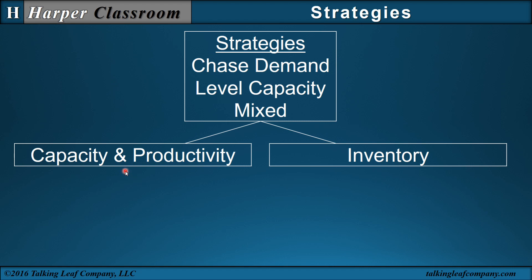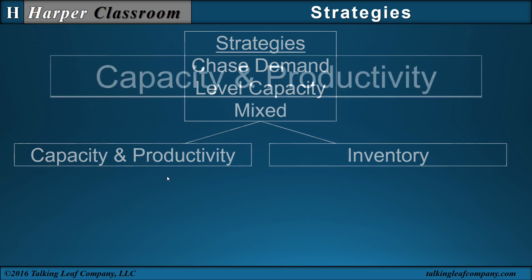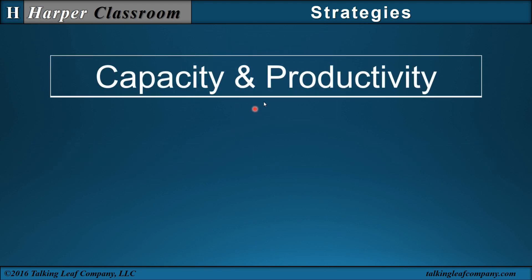Our capacity, productivity, and inventory will be examined under three different strategies: chase demand, level capacity, and mixed. Let's start with capacity and productivity, and do this in Excel.